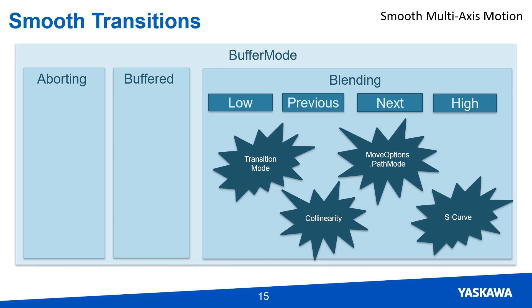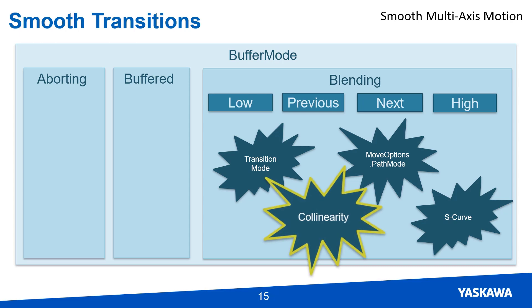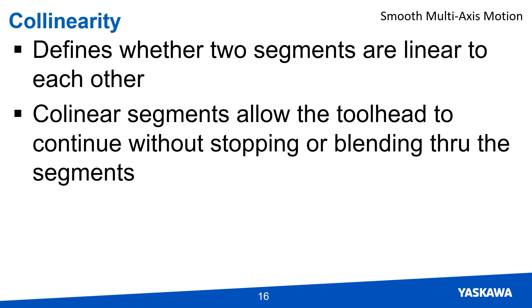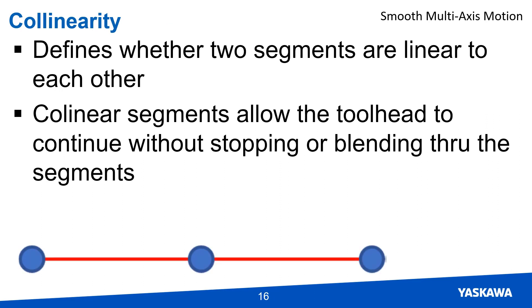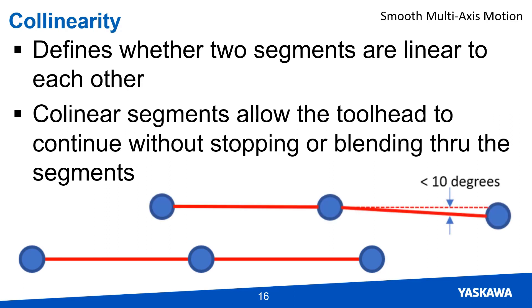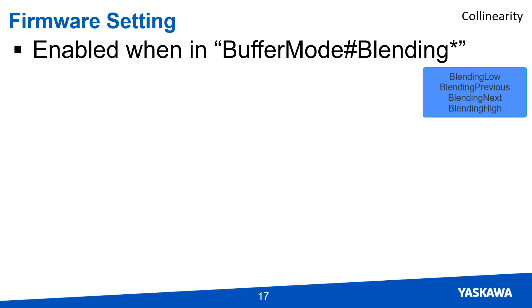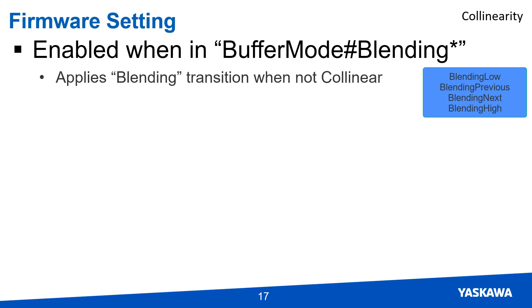If smooth motion is required after transition modes are added, the linearity limit can be adjusted. Collinearity defines whether two segments are linear or tangent to each other. Collinear segments do not require blending to transition between them. In certain applications, collinearity can be modified to allow smooth motion when segments are not perfectly collinear. This feature is handled at both the firmware level and the application level. At the firmware level, the collinearity setting adjusts whether the transition mode is used or whether the segments are connected without adjustment. The collinearity setting is in degrees.